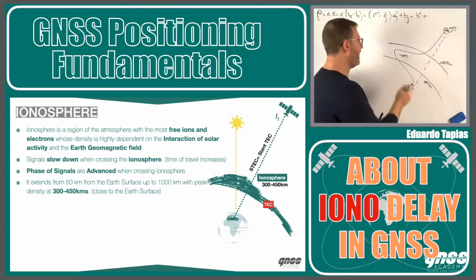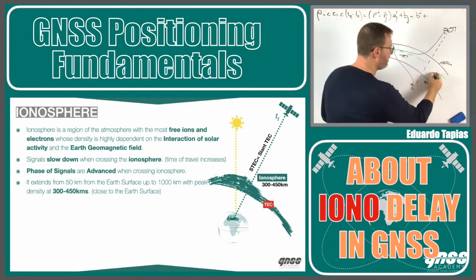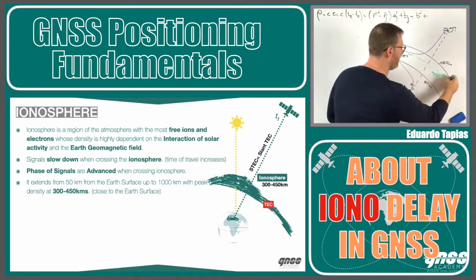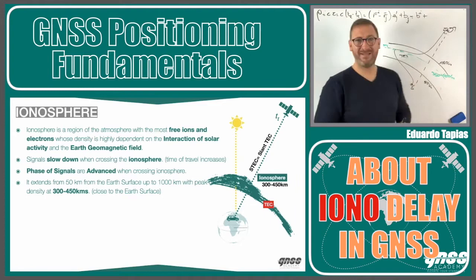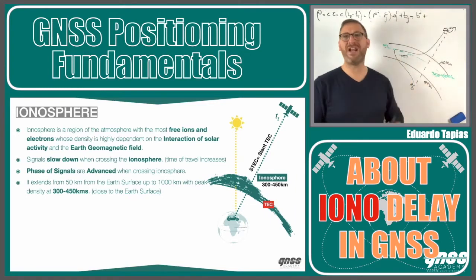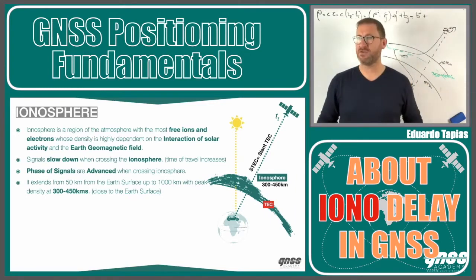Between 50 kilometers and 1,000 kilometers, we usually have a peak — which is the F2 layer — around 350 to 400 kilometers. In this layer, we have a lot of electron content.